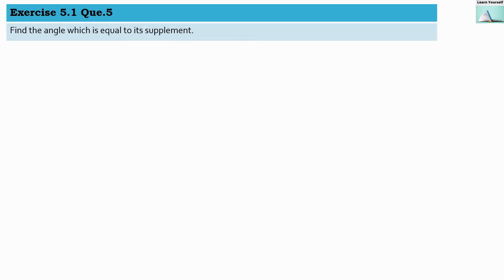Welcome to Learn Yourself. Exercise 5.1, question number 5: Find the angle which is equal to its supplement. This means we have to find an angle where two angles are equal to each other.